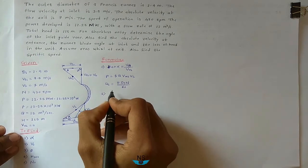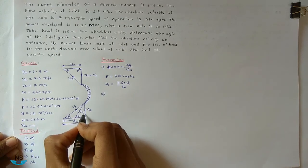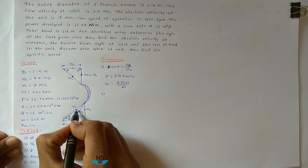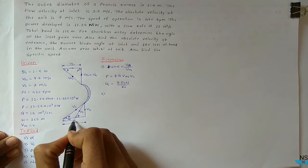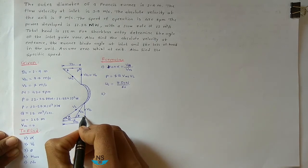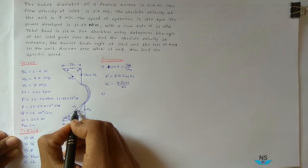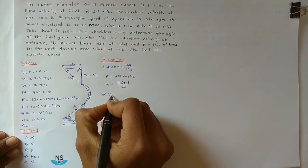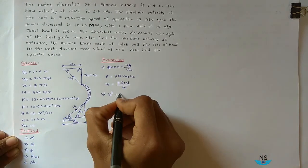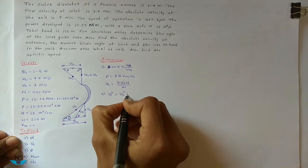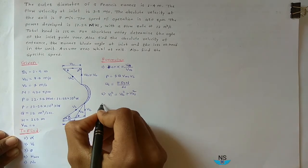For V1, from the inlet velocity triangle, we use Pythagoras theorem since it is a right-angle triangle: V1² = Vf1² + Vw1². We know Vf1 and Vw1, so we can easily find V1.